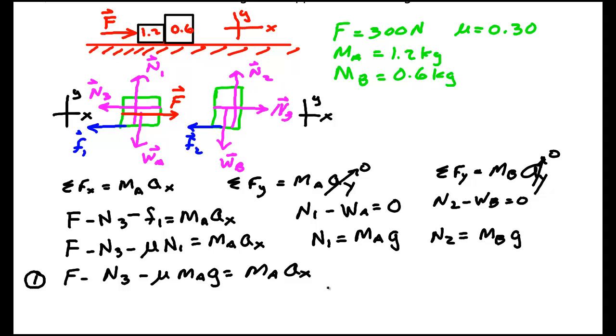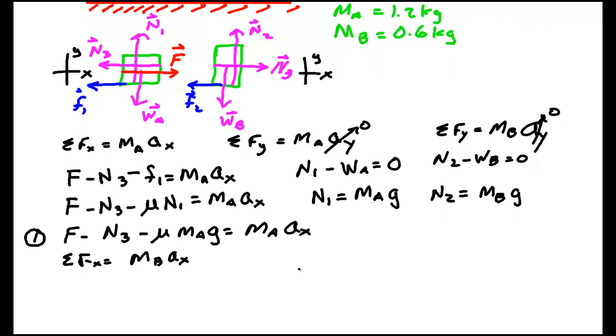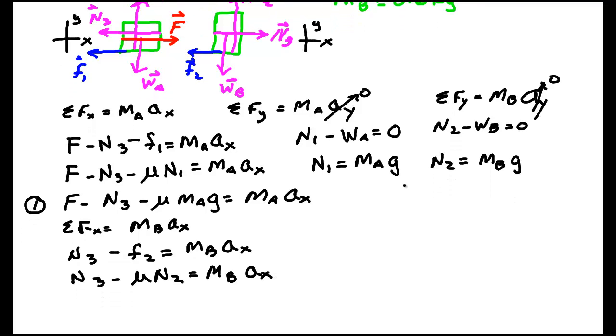Now, we also need to work the X part. So down here, sum of the forces in X is MB times AX. Maybe you can put it all in your paper in one place, but unfortunately I can't. Reading this diagram, I have N3 as positive. I have minus F2, and that's equal to MB times AX. So this is N3 minus μN2, because that's the normal force here, because it's creating this friction, equals MB times AX. Now, I'm going to substitute this N2 in for here, and I get N3 minus μMB times G is MB times AX. And this is equation number two.